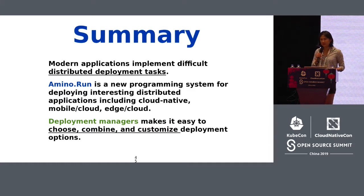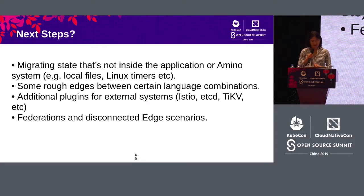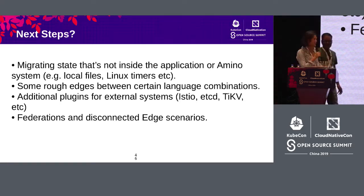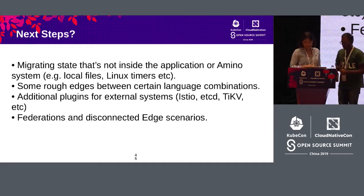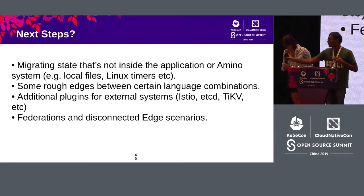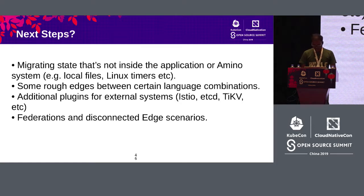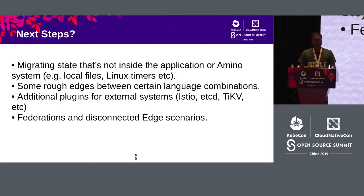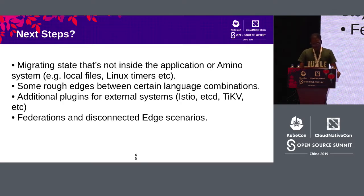I'll hand it back to Venu for the next steps and demo. About the next steps — it's still early. We have a lot of ways in which we would like to extend Amino Run in the future. Today, microservice migration only works for state stored inside the microservices. But there can be local files and dynamic states that we are not migrating as of now — we'll have to work on that.